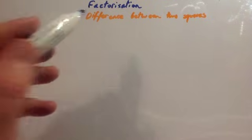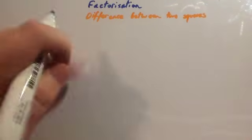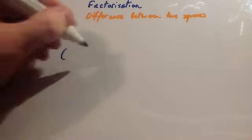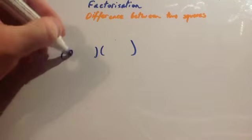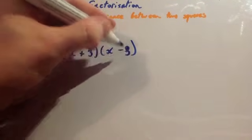Okay, this video we're going to look at factorization and difference between two squares. So what I'm going to do is write down two brackets: (x + 3)(x - 3).